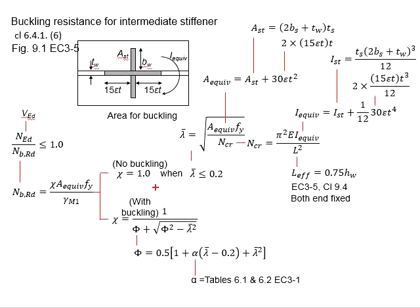The main difference between the calculation steps here is the equivalent area and also the equivalent second moment of inertia. The equivalent area is referring to this diagram where Ast is actually referring to the area of this stiffener and also 30 axial times t is actually referring to the two sets of 15 axial times t here.